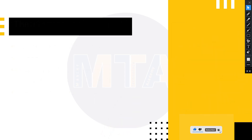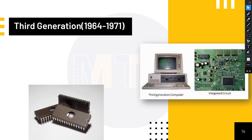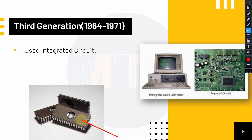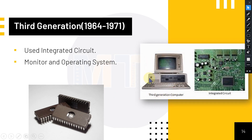The third generation of computers belongs to 1964 up to 1971. In this type, they replaced transistors with ICs — Integrated Circuits. An integrated circuit is a combination of more than one transistor combined into one chip. The idea was that the more transistors combined, the more processing power. These combined chips are called ICs — Integrated Circuits.